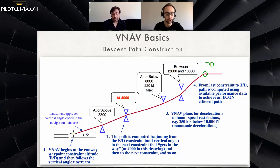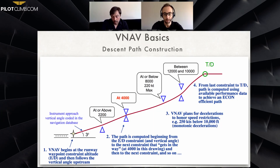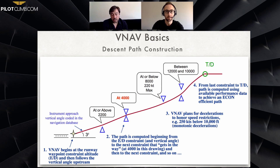Basically, respecting all the altitude constraints and speed constraints in the whole path — that's what you need to understand. On the next slide, starting from the beginning, at point number one the VNAV begins at the runway waypoint constraint altitude.